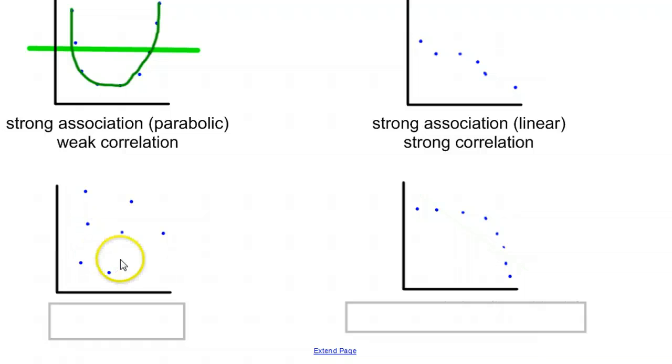Sliding down here, this graph does not have much of any kind of pattern, of any shape, so you would say that it has both weak association and weak correlation, because it doesn't form any pattern, and in particular, it doesn't form a line.